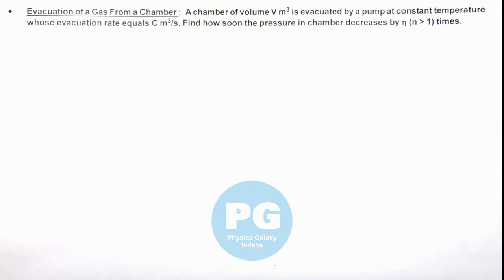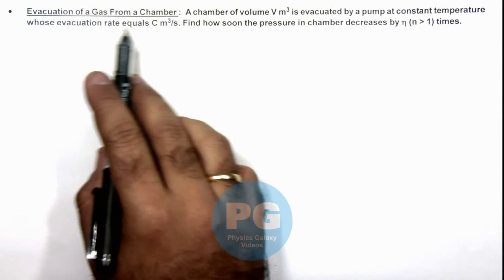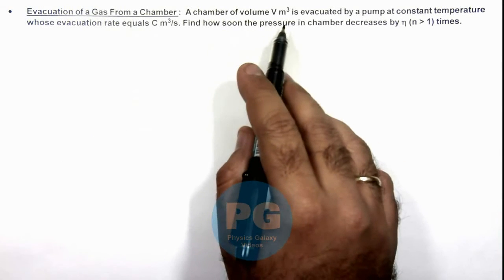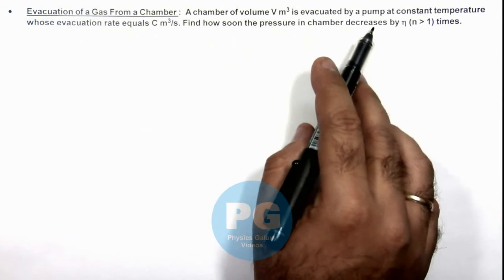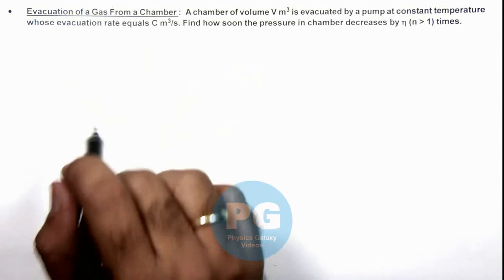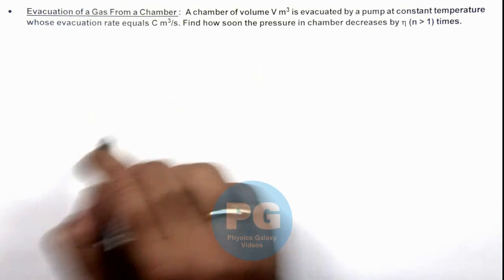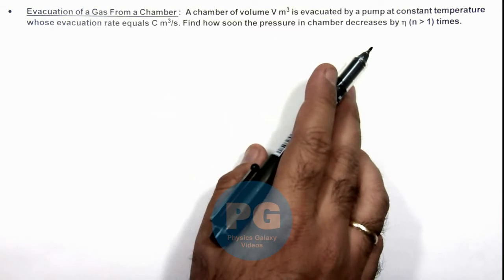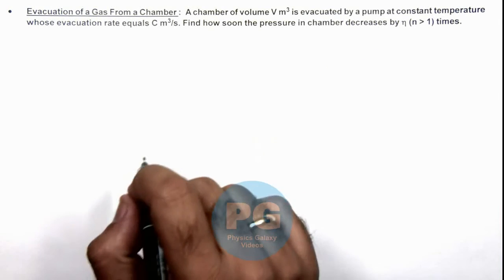In this illustration we'll discuss the evacuation of a gas from a chamber. We are given that a chamber of volume V m³ is evacuated by a pump at constant temperature, whose evacuation rate is equal to C m³/s. We are required to find how soon the pressure in the chamber decreases by η, where the value of η is greater than 1.